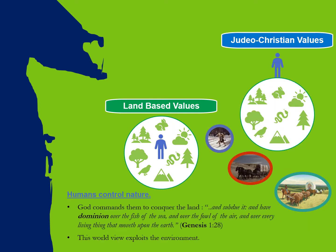Those values are what we've been calling Judeo-Christian values from the Bible — directly from Genesis. Humans control nature. There's the human at the top. God commands them to conquer the land and subdue it and have dominion over the fish in the sea and over the fowl in the air and over every living thing that moves on Earth. This worldview uses the resources and removes the obstacles in a more forceful way — not just to sustain themselves for one more day, but to sustain themselves long-term and make money from them.